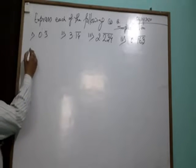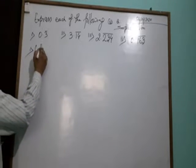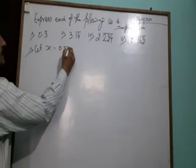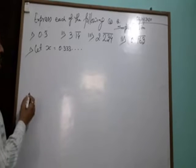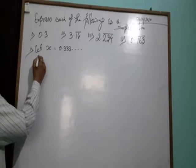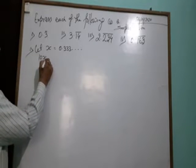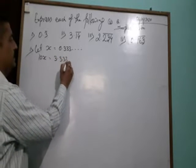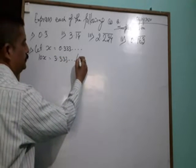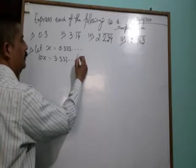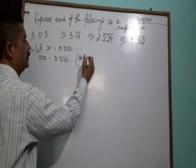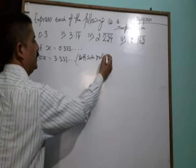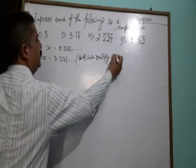First, let X equals 0.3333 and so on. Multiply both sides by 10, so 10X equals 3.3333. Multiply by 10 and check it.